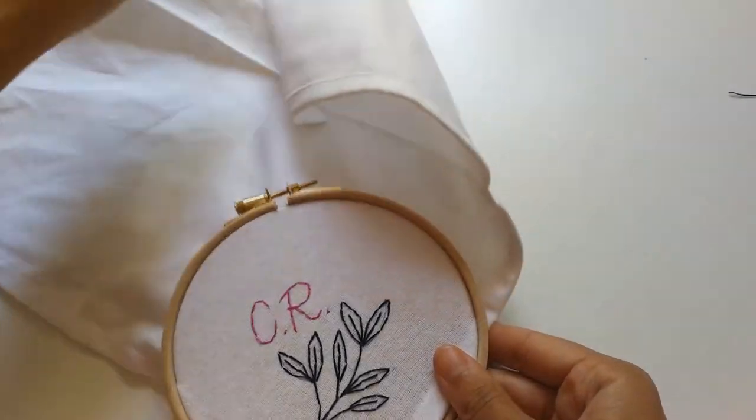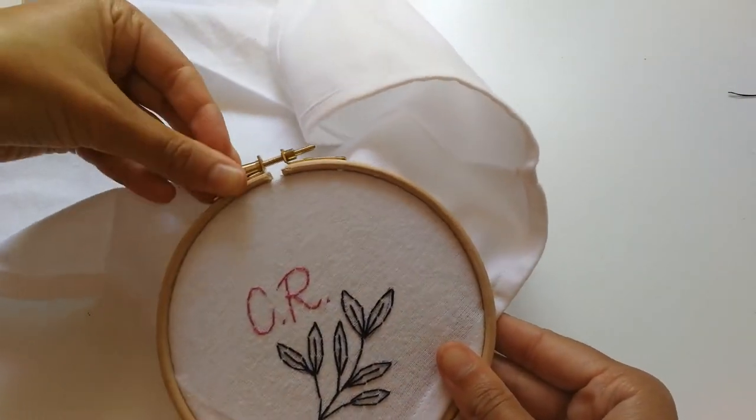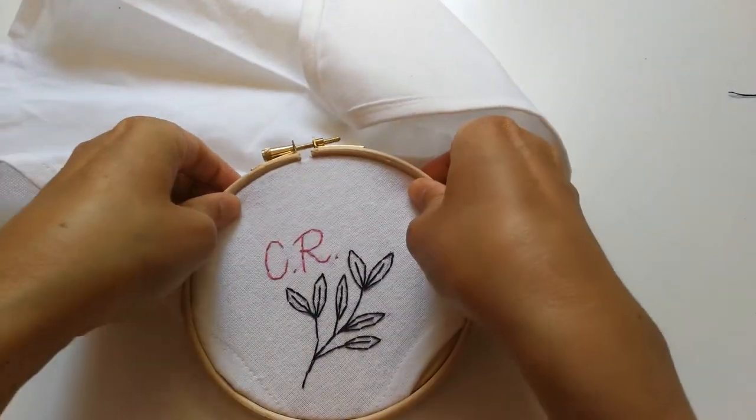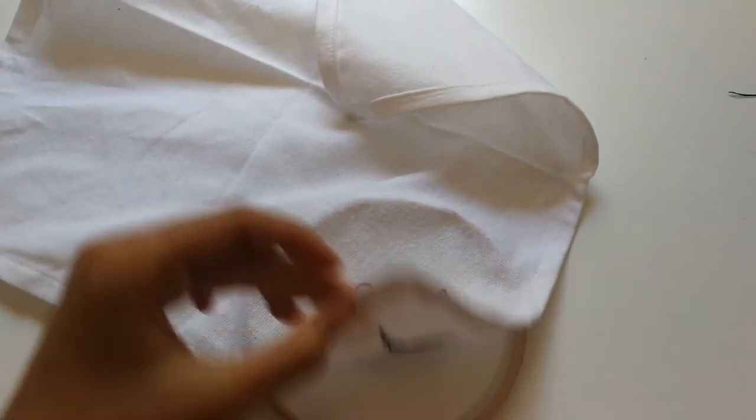To remove the hoop, you're just going to loosen it very slightly and pull the outer hoop off and take the outer hoop away.